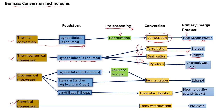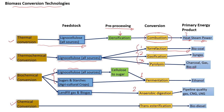In biochemical conversion processes, there are 2 major processes: ethanolic fermentation and anaerobic digestion. Ethanolic fermentation depends on the quality of the raw material. For lignocellulosic biomass, the material must undergo a hydrolysis stage to produce reducing sugars, which can then be fermented to produce ethanol.